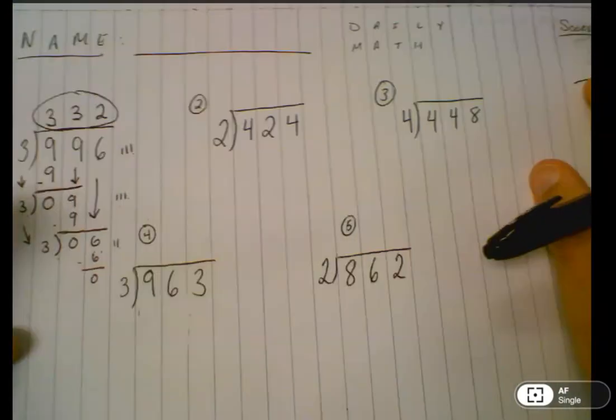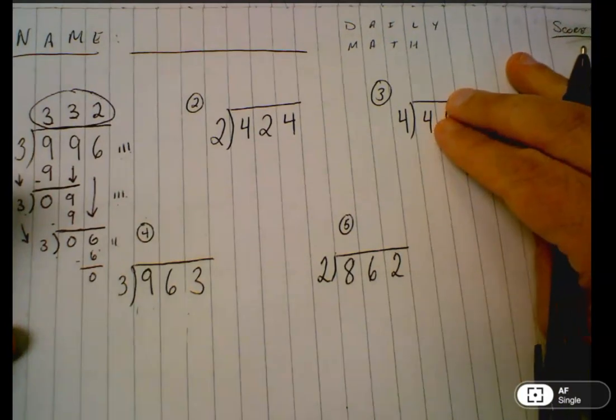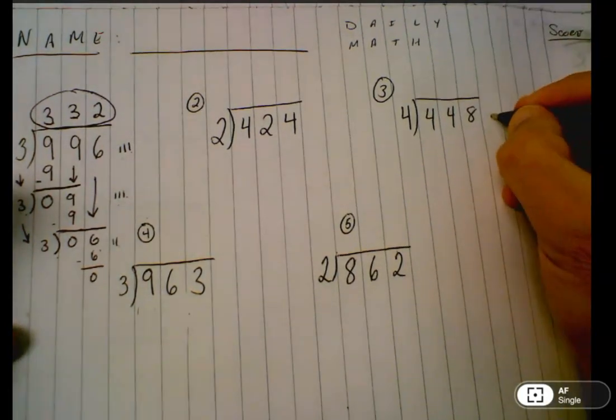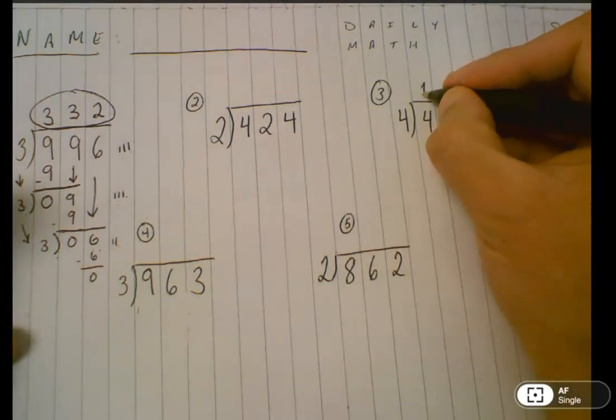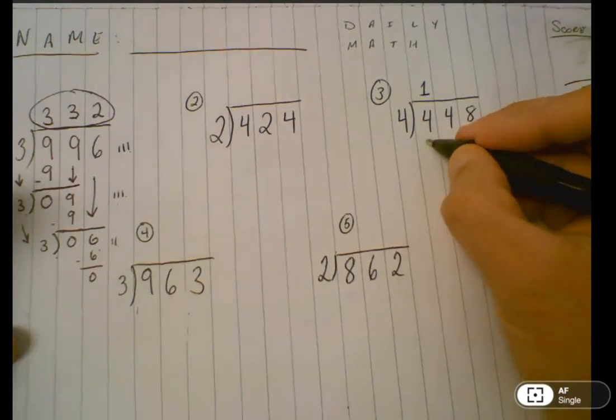Let's skip number two, move on to three. I'll do numbers one, three, and five tonight. Again, skip count by four until I get close to four. That's just one. So I'm going to put the number one here because there's one tally there, part of my quotient. Four times one is four.